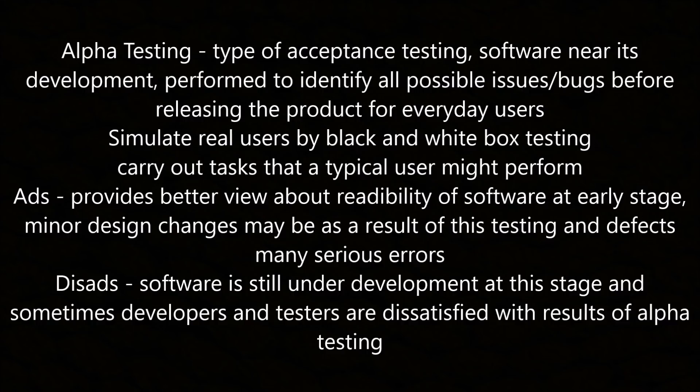Alpha testing is the first phase of acceptance testing. The software is tested nearest to development to identify all possible issues before releasing a product for everyday users. It simulates real users by black and white box testing and carries out tasks that a typical user might perform. The advantage is that it provides a better view of the reliability of software at an early stage, though many design changes may result and developers and testers are sometimes dissatisfied with the results.